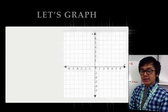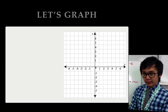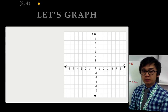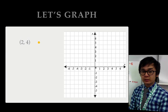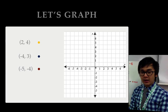In this particular example, we will use our x-y plane, or the Cartesian plane, and we're going to plot the following points. We have (2,4), (-4,3), (-5,-4), and (3,-3).